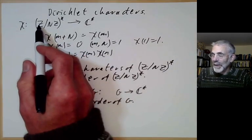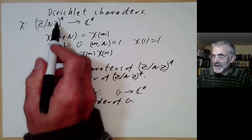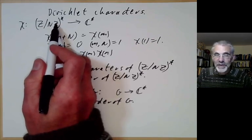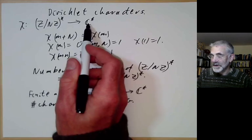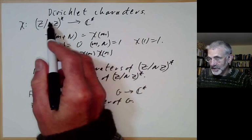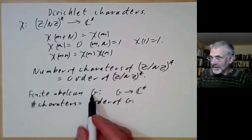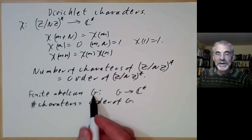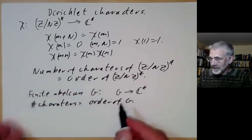What we did was decompose Z over nZ star into a product of cyclic groups, proved the theorem for cyclic groups, and used the Chinese remainder theorem to deduce it for general n. Any finite abelian group can also be written as a product of cyclic groups, so we can more or less copy the previous proof.